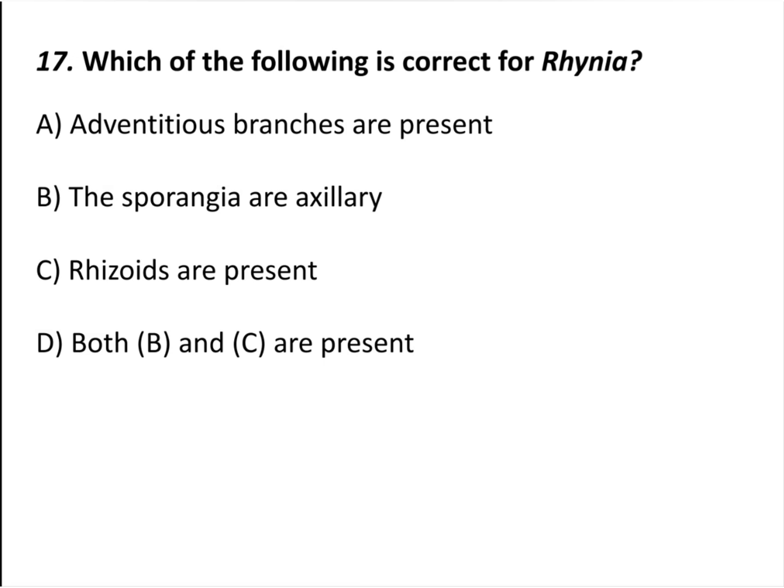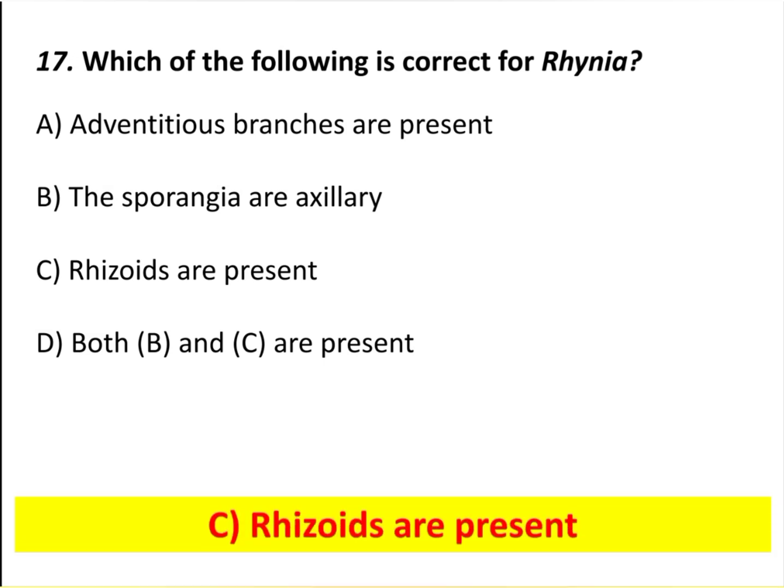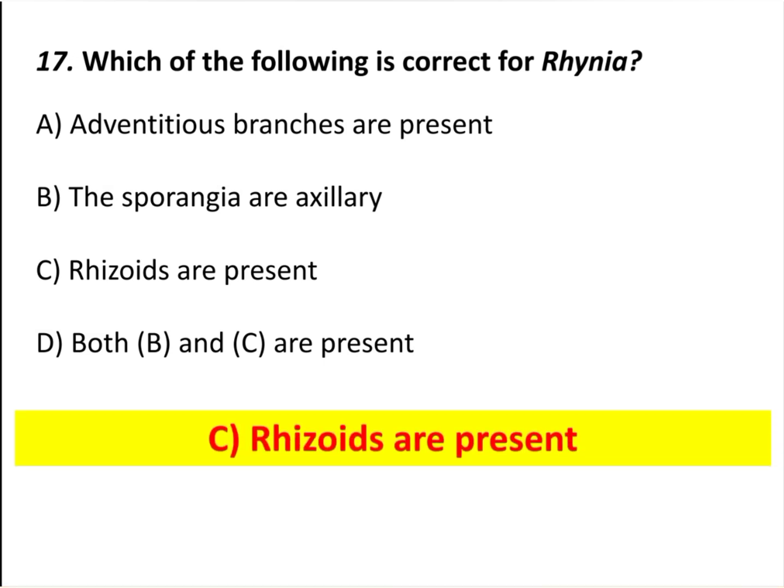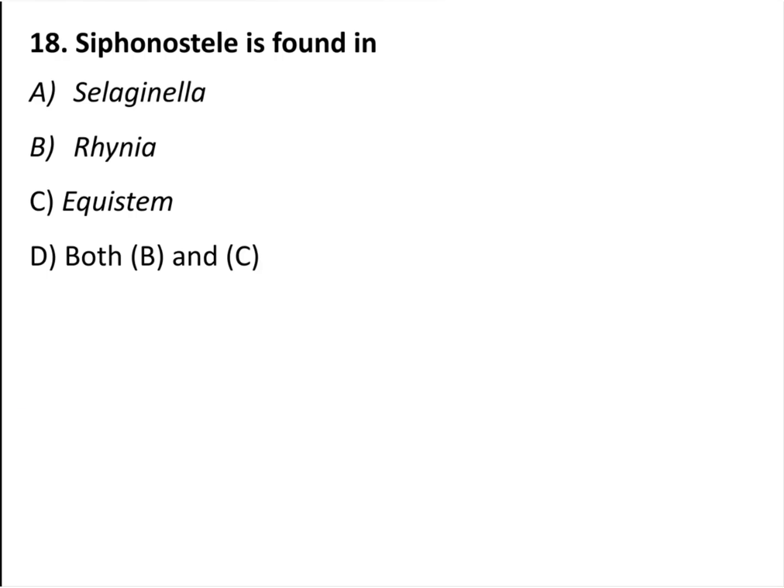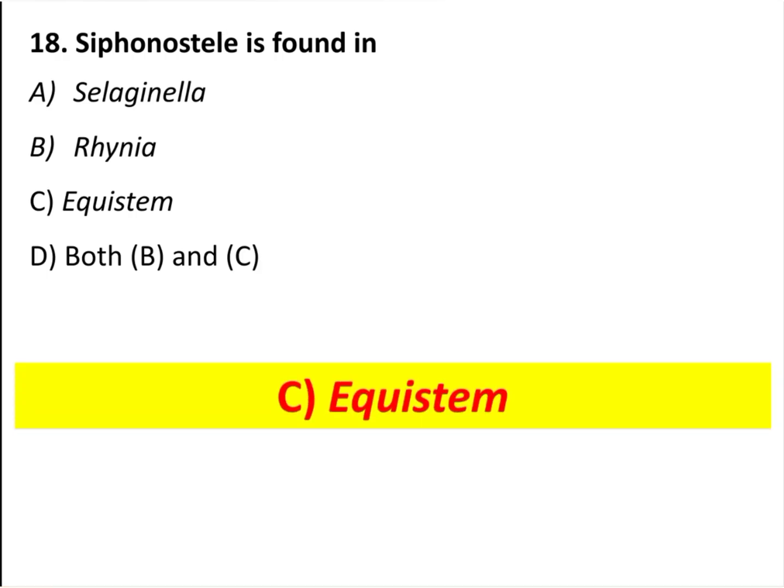Question number 17. Which of the following is correct for Rhynia? Rhizoids are present. Siphonostele is found in Equisetum.